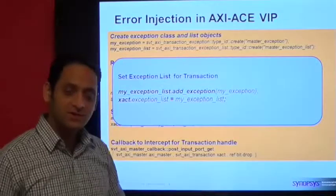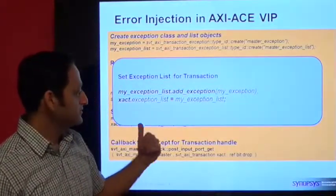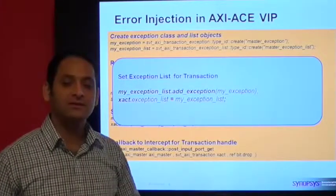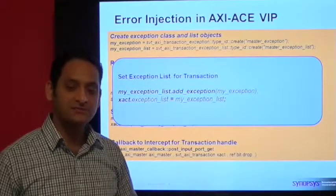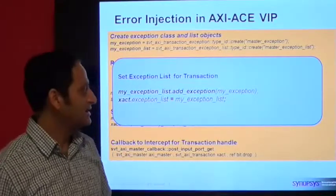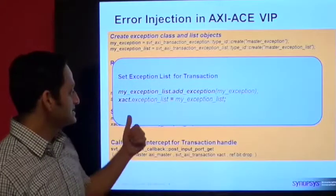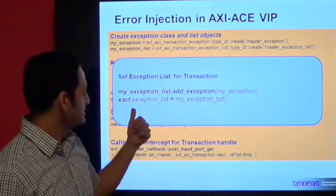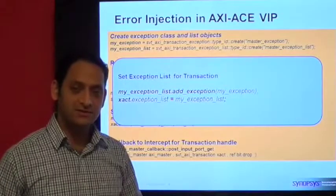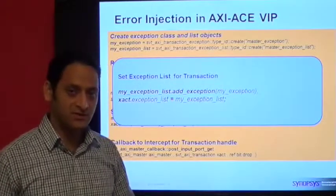After you have programmed the object, you need to set that object for the exception list. You can create as many objects of exception type as many errors you want to generate, and add all of them to that particular exception list. This exception list then needs to be fed to the transaction, so that for that particular transaction it can go and execute those exceptions on the bus.